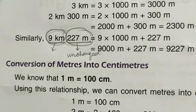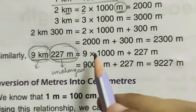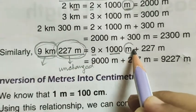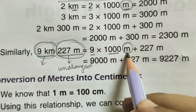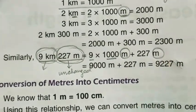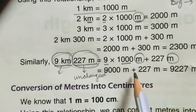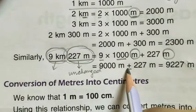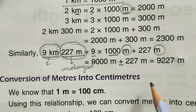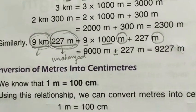Simply multiply 9 by one thousand to get 9000 meters, plus 227 meters. Now both are in meters, so simply add them together. That is how 9 kilometers 227 meters is converted into meters.